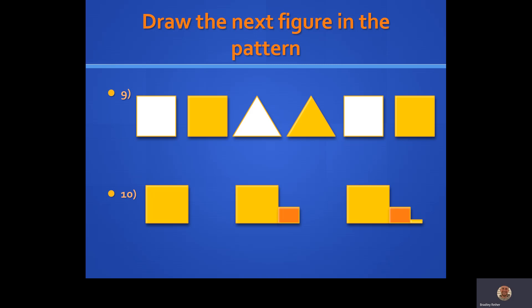So in number 9, we've got 2 squares, then 2 triangles, then 2 squares. What's going to come next? Also, notice there's some colors.